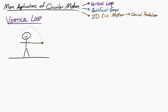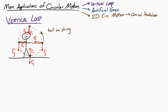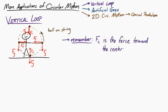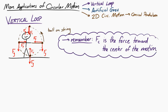If we think about the forces acting on the ball at four different points, in each situation we're going to have a tension force and a gravitational force, but they will be oriented differently at each point in the circle — sometimes in the same direction, sometimes opposite, sometimes 90 degrees from each other. The key thing to remember is that the centripetal force is always the force toward the center.